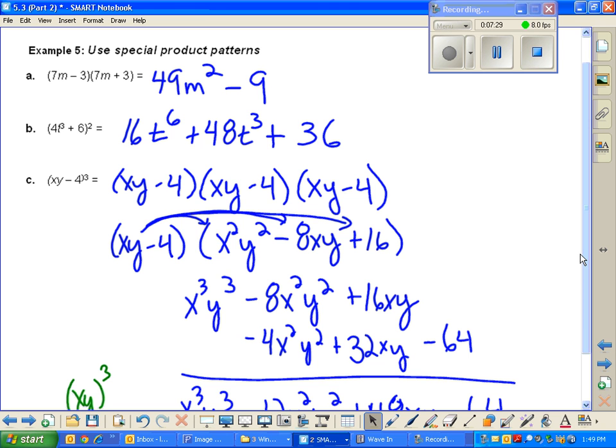So part A, and you see that I don't have any work. For those of you that don't like to show work, check it out. You don't have to show work. Geo, right up your alley, dude. So 49F squared minus 9. Part B is 16T squared plus 48T cubed plus 36. And then part C, yeah, long way it is. I'll go ahead and show you that answer. Okay, does anybody have any questions about those?